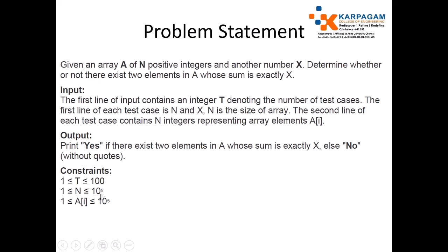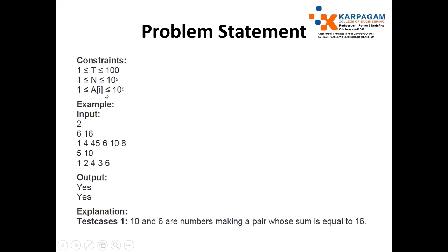Here are the given constraints: T is ranging from 1 to 100, N is ranging from 1 to 10 to the power 5, and array elements A[i] is ranging from 1 to 10 to the power 5.